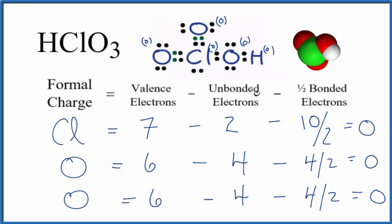Since all of the formal charges on the atoms here in HClO3, since they're all zero, that tells us that this is the best or most favorable, most likely Lewis structure for HClO3, chloric acid.